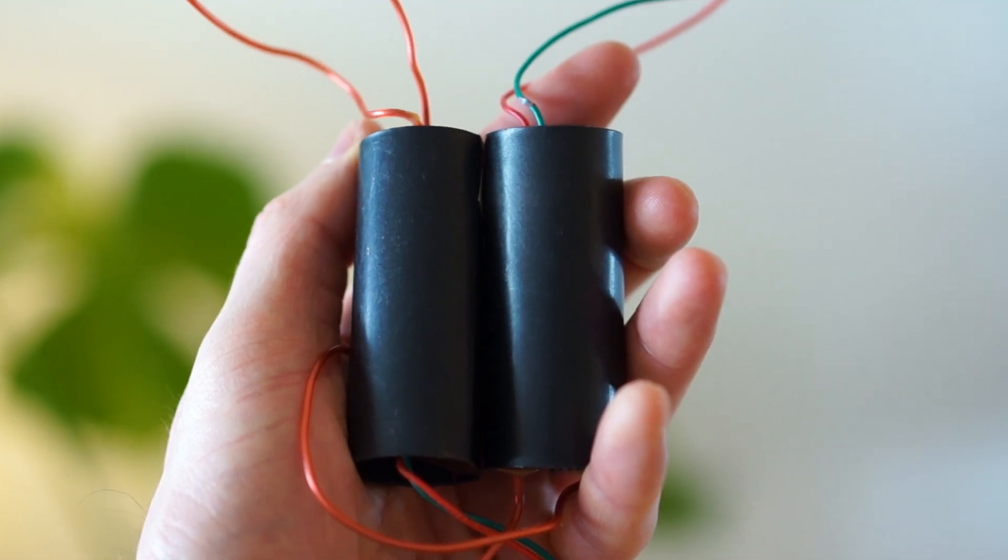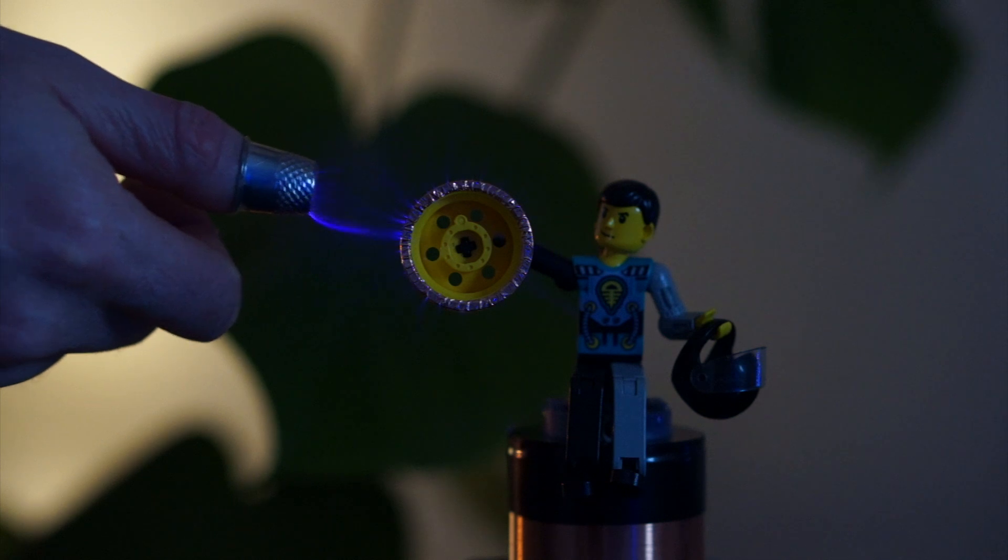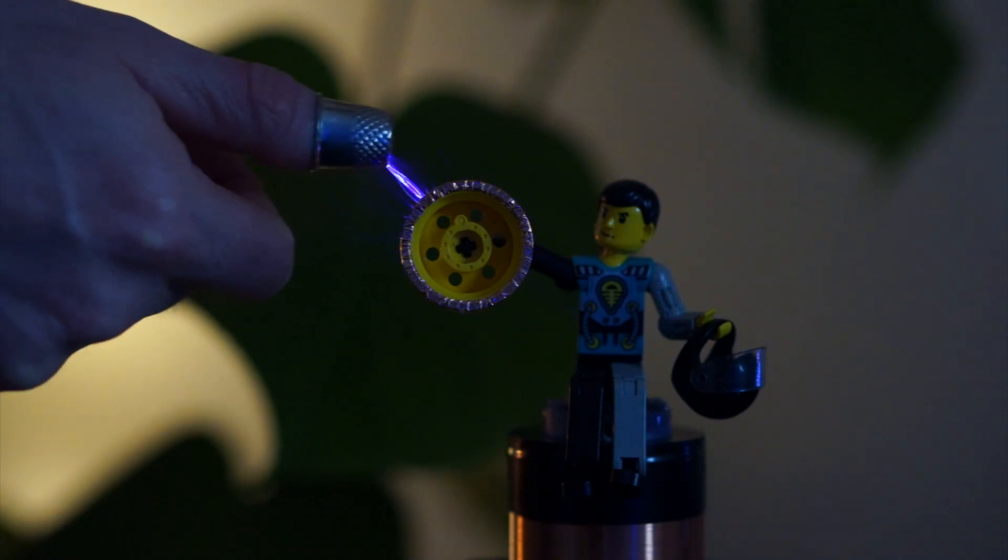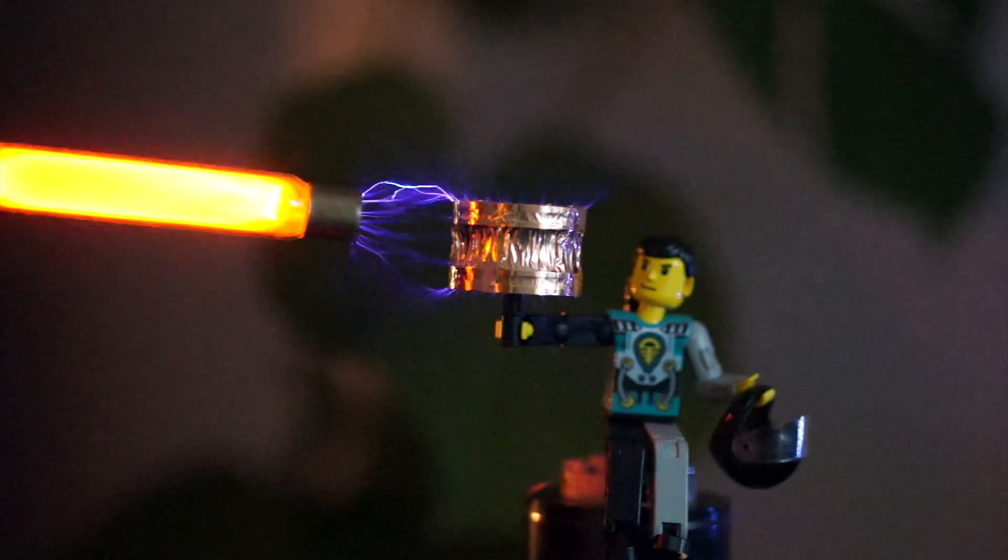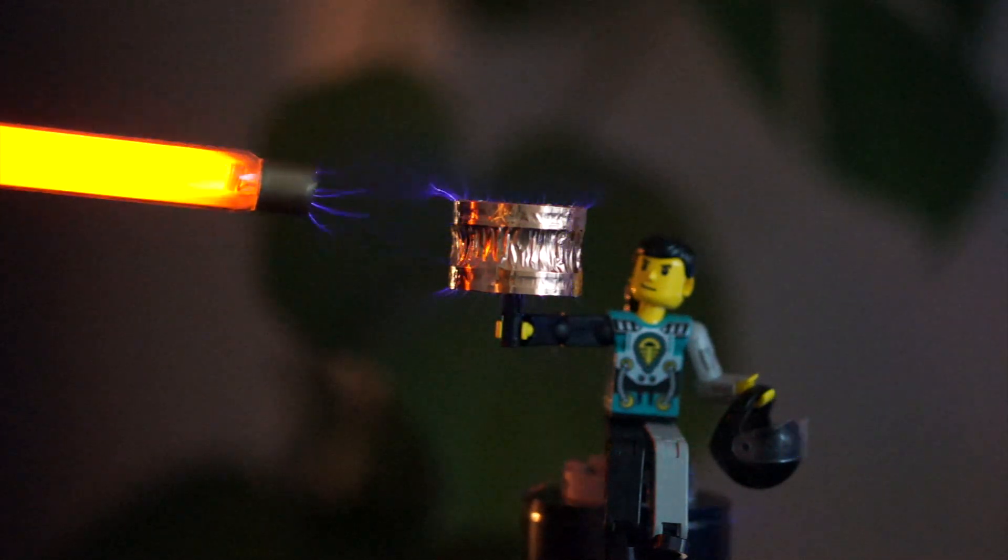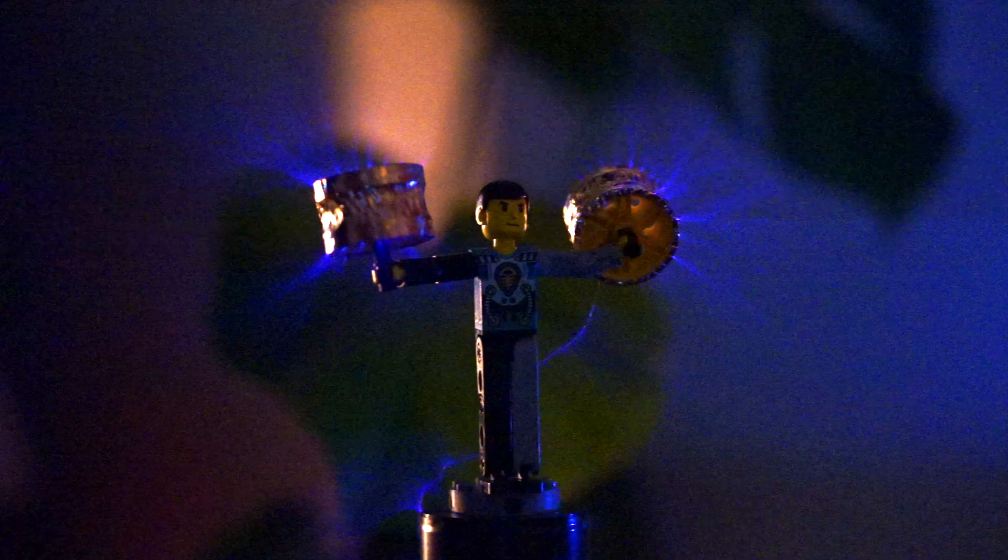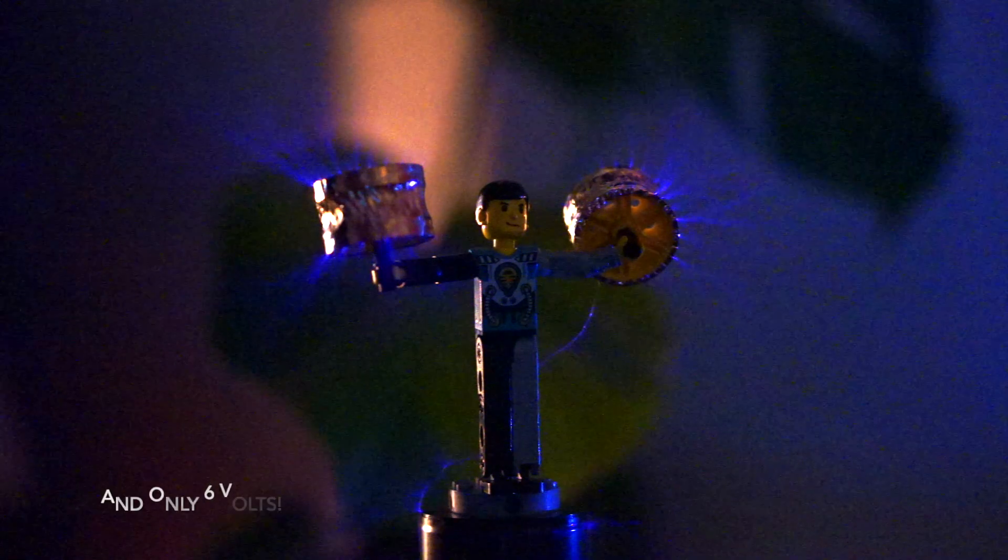By using two of these generators in series their output capacitors halved in capacitance allowing me to drop the size of the coil while maintaining the same output. I just think it looks so much more impressive having this output from such a compact little Lego model.